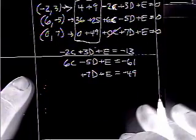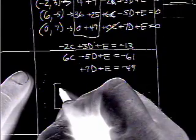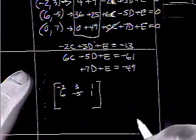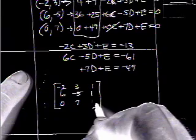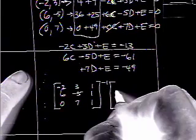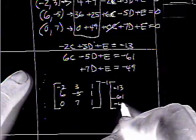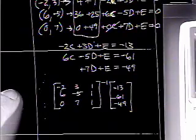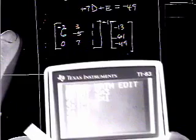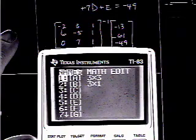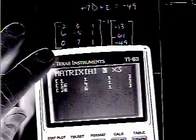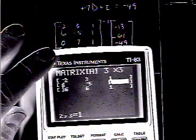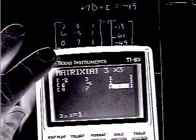Well, we're going to change this to a matrix format. Do the exact same thing we were doing before. We got a negative 2, a 3, and a 1. 6, negative 5 and 1. 0, 7, and 1. We want the inverse of that times negative 13, negative 61, negative 49. So, we're going to change this to a matrix, and we want this to be negative 2, 3, and 1. 6, negative 5 and 1. 0, 7, and 1.